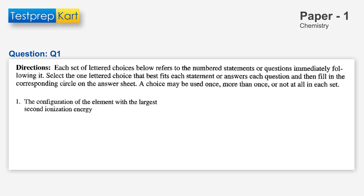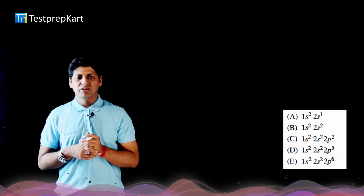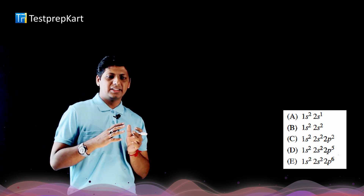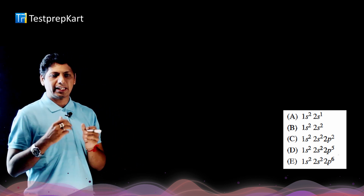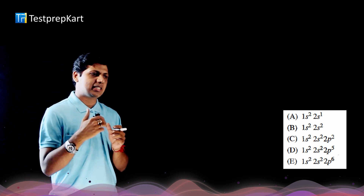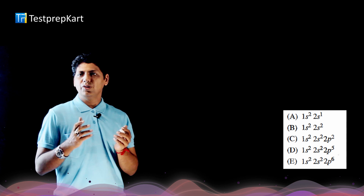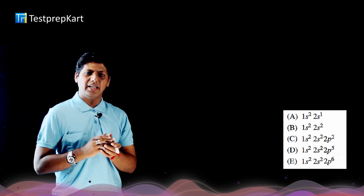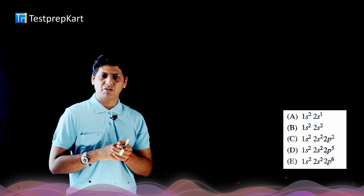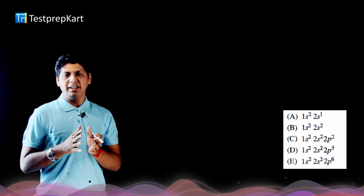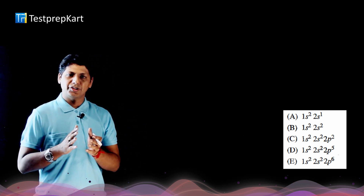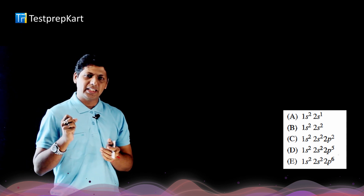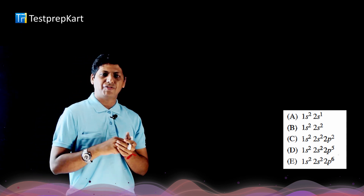The first question asks for the configuration of the element with the largest second ionization energy. The second ionization energy involves withdrawing the second electron from a gaseous atom. Alkali elements (Group 1) have only one electron in their outermost orbit, so the second electron is much closer to the nucleus, requiring very high energy to remove.